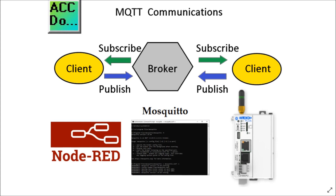This protocol is not for remote I/O or real-time deterministic applications. MQTT is a good solution for applications that move data from hundreds or thousands of machine sensors to clients in many networks. We will be installing a Windows-based broker called Mosquitto, and the Click Plus PLC will be one of the clients publishing and subscribing to the MQTT broker. Node-RED will be the other client publishing and subscribing to the broker, and each client will share the information.